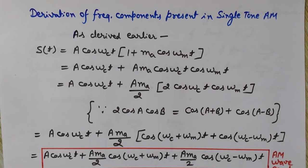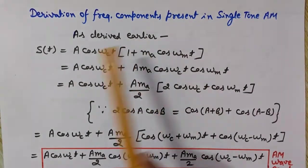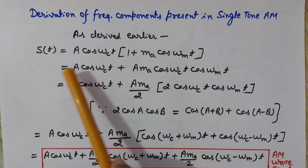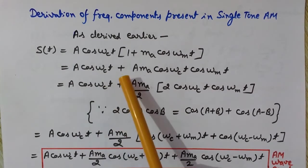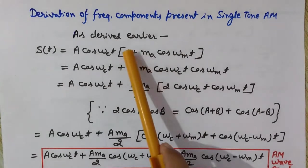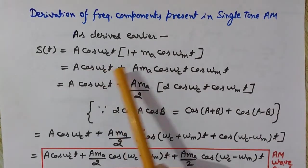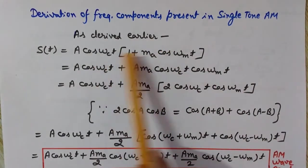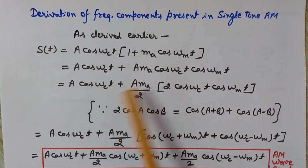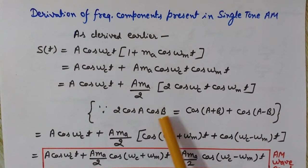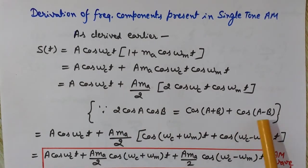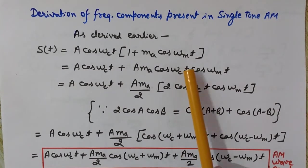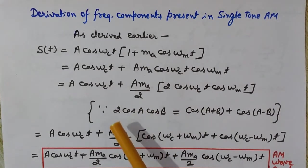Now we will derive the frequency components present in the single-tone AM wave. Starting from s(t) = A·cos(ωc·t)·[1 + ma·cos(ωm·t)], multiplying out gives A·cos(ωc·t) + A·ma·cos(ωc·t)·cos(ωm·t). We will use the trigonometric formula: 2cosA·cosB = cos(A+B) + cos(A−B).